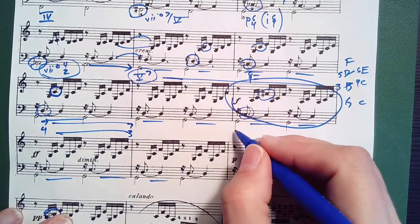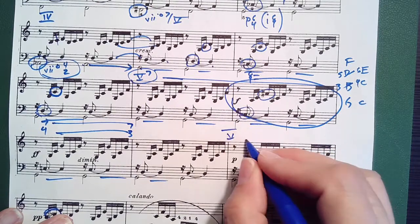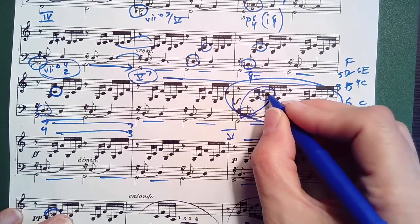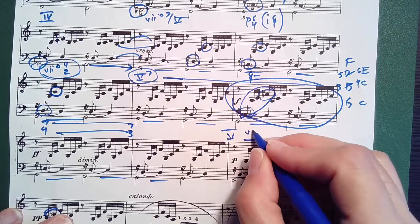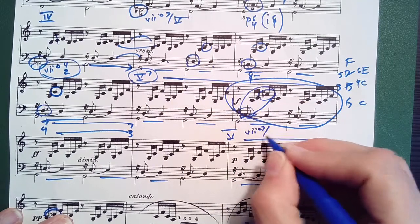This right here is over a five five pedal. We have this chord tonicizing five: F sharp, A, C, E flat. Seven seven of five.